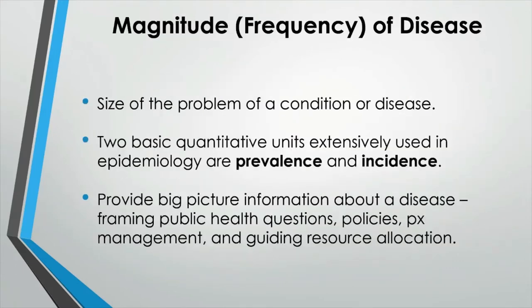Now that we have looked at basic quantities used in epidemiology, let's talk about how the size or magnitude of a disease is represented in a population. One of the most frequently used frequency measures in epidemiology is morbidity, which means a disease state, disability, or negative health outcomes. Usually, measures of morbidity are characterized by two numbers: prevalence and incidence. These two numbers provide big-picture information about a disease, framing public health questions, policies, patient management, and guiding resource allocation.